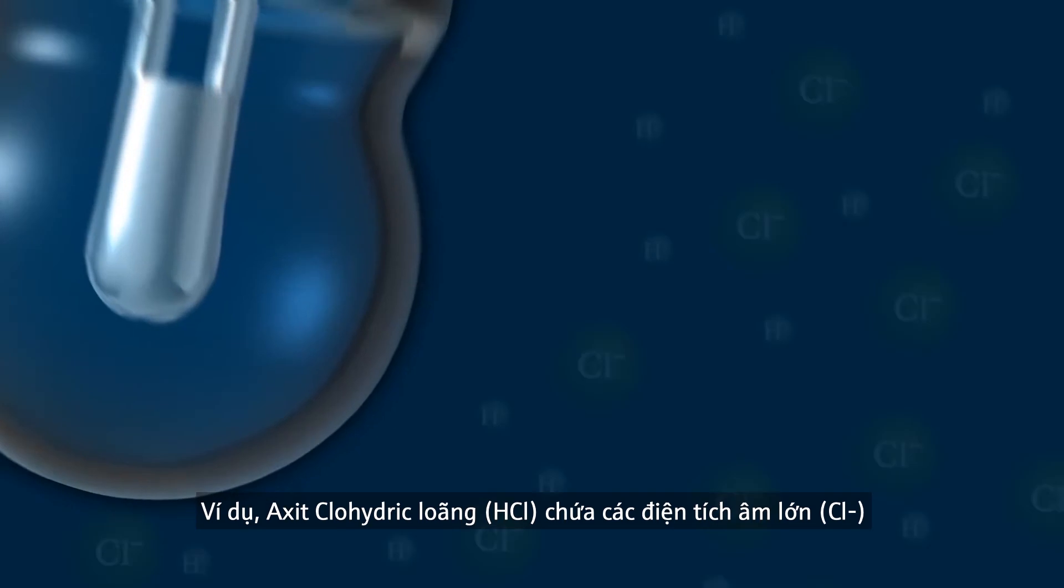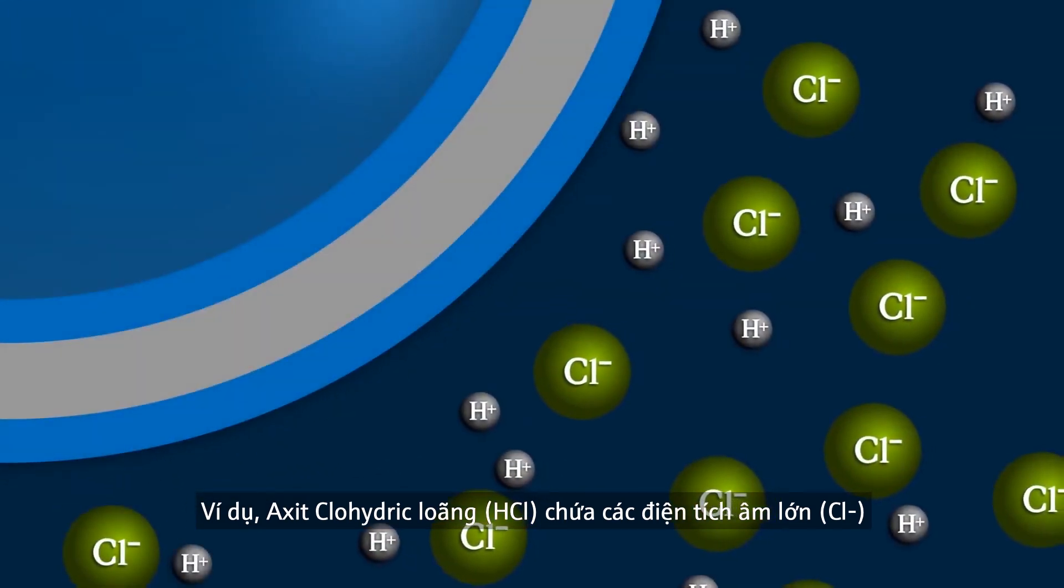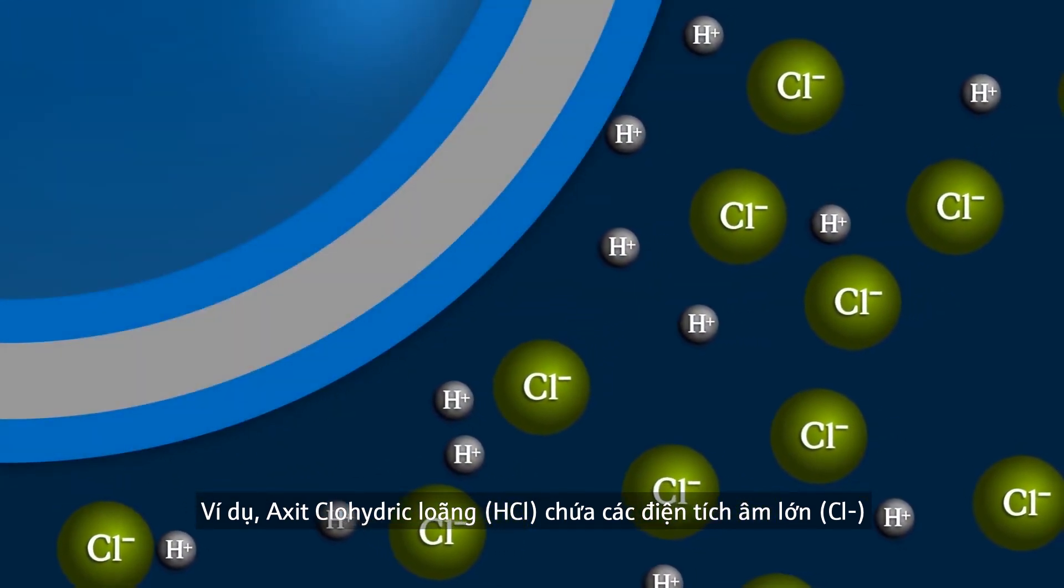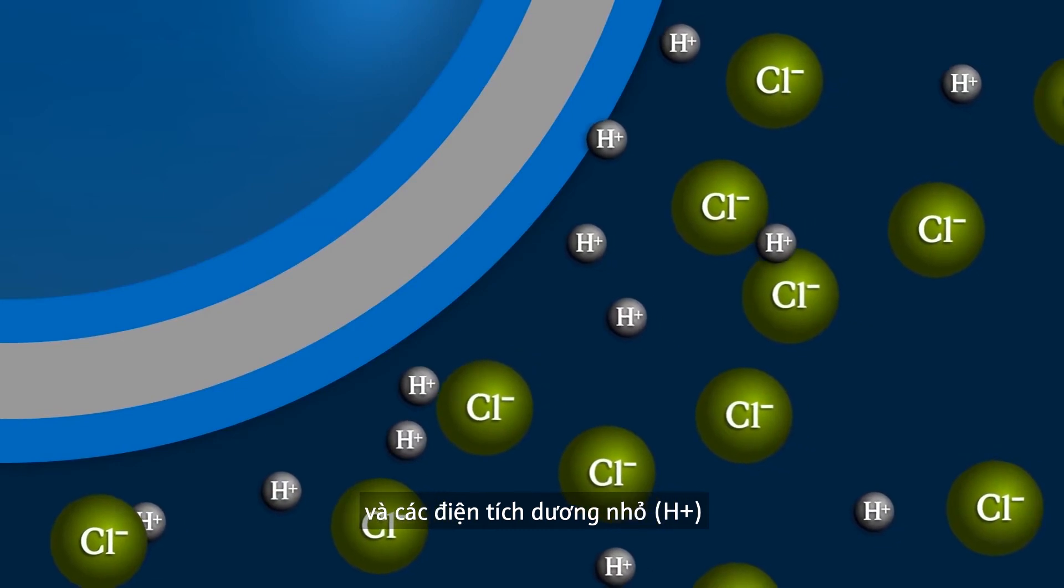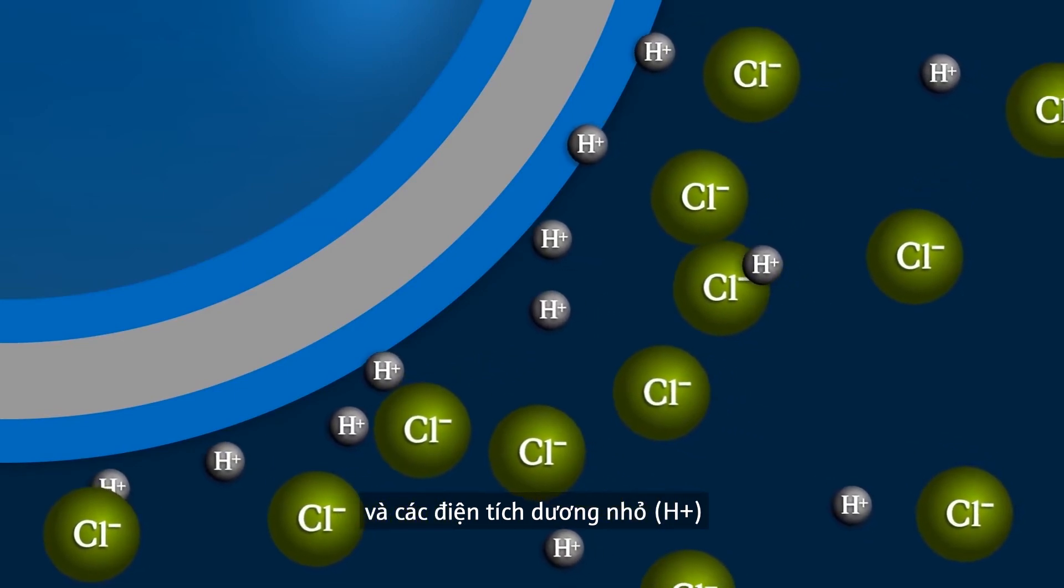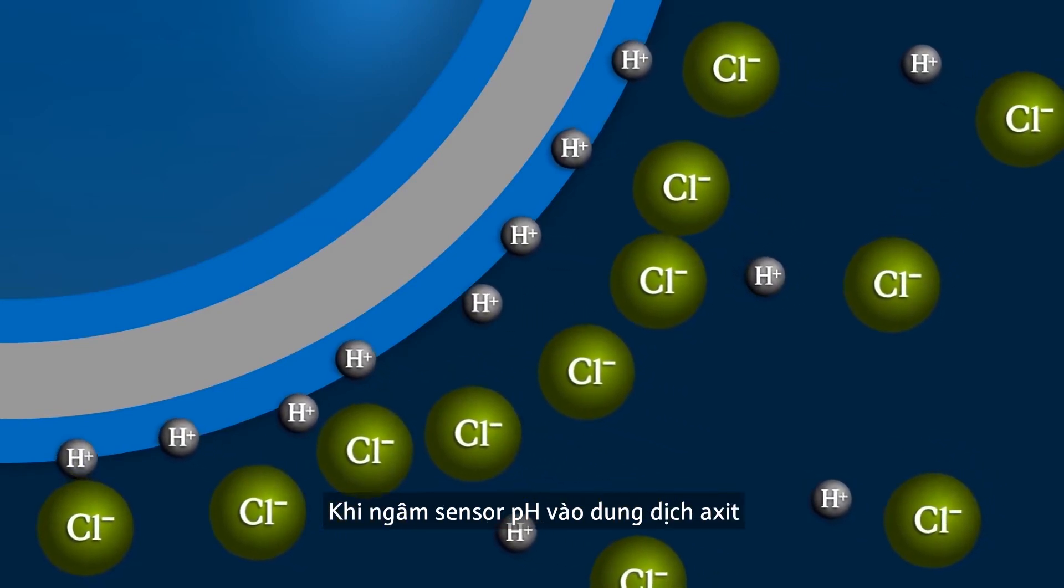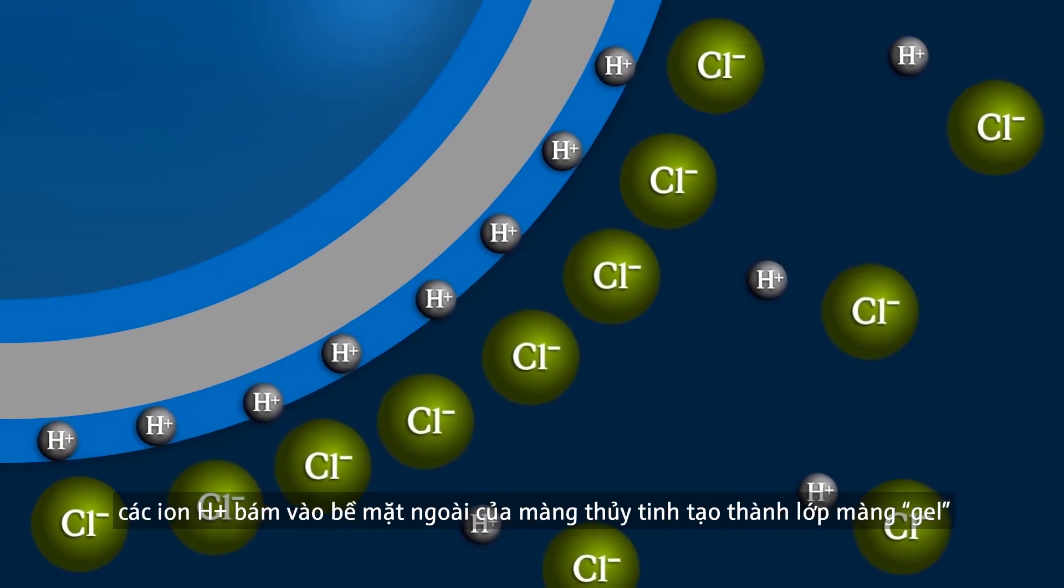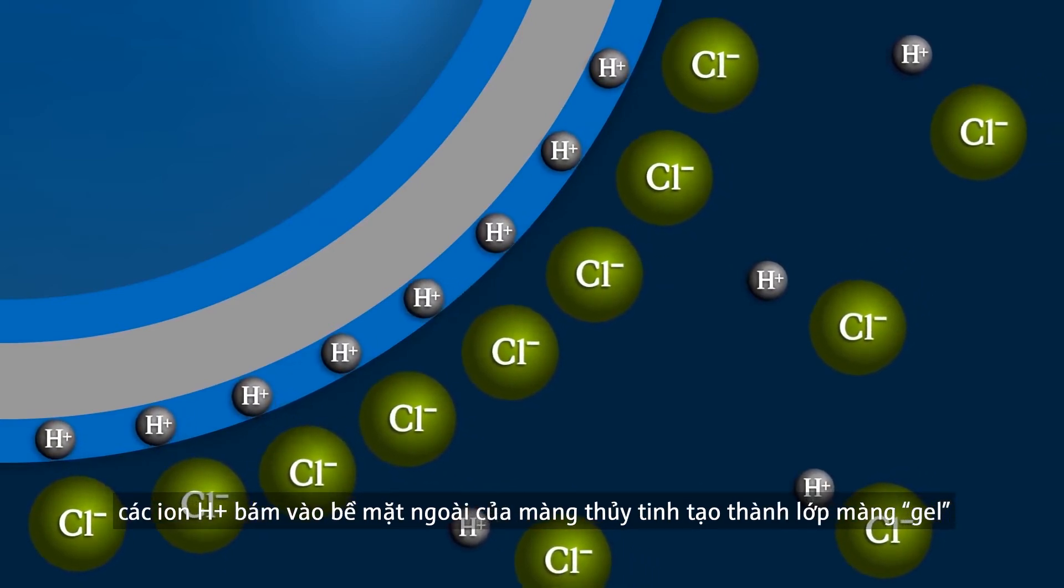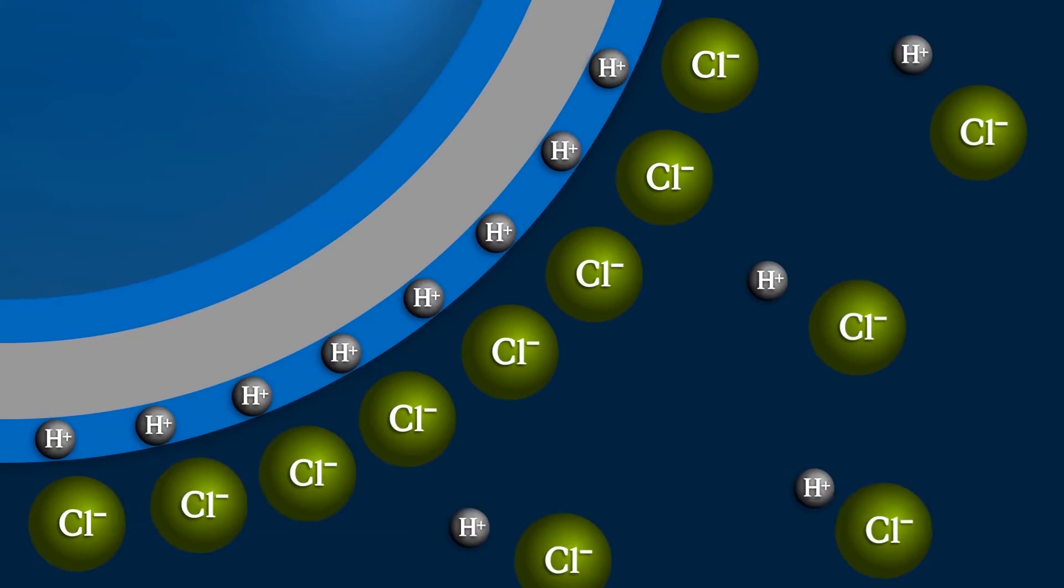Diluted hydrochloric acid, for example, contains large negatively charged chloride ions and small positively charged hydrogen ions. When the pH sensor is immersed into this acid, the hydrogen ions are able to penetrate the boundary area of the glass membrane, the so-called gel layer. The considerably larger chloride ions remain in the solution. The result is a charge separation.